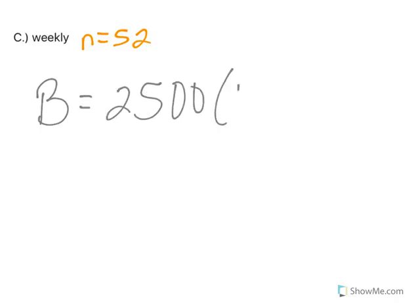Okay, let's go to part C, weekly. So remember, weekly means that n is 52 because there's 52 weeks in a year. So the balance is $2,500, 1 plus my .047, divided by 52.